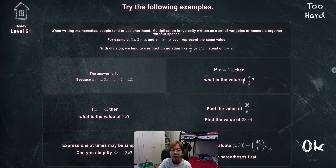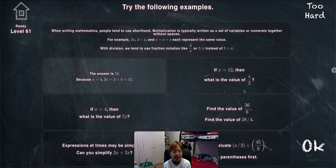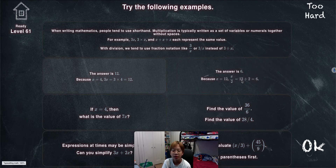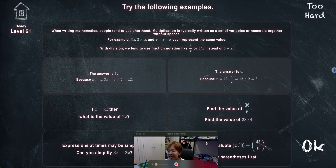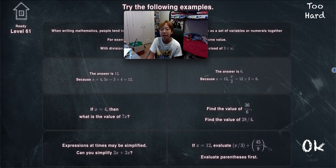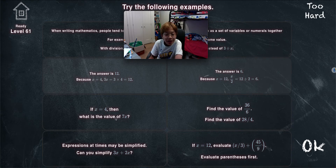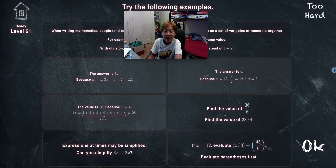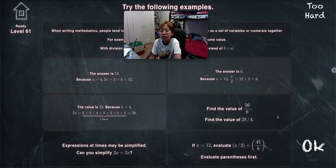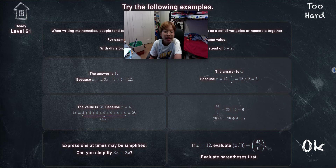If x is 12, what is the value of 12 over 2? We do the division: 12 divided by 2 equals 6. These are more like flashcards than questions, but it's a fun example of how to answer. If x equals 4, what is the value of 7x? 7 multiplied by 4 equals 28. Find the value of 36 over 6 and 28 over 4: 36 divided by 6 equals 6, and 28 divided by 4 equals 7.